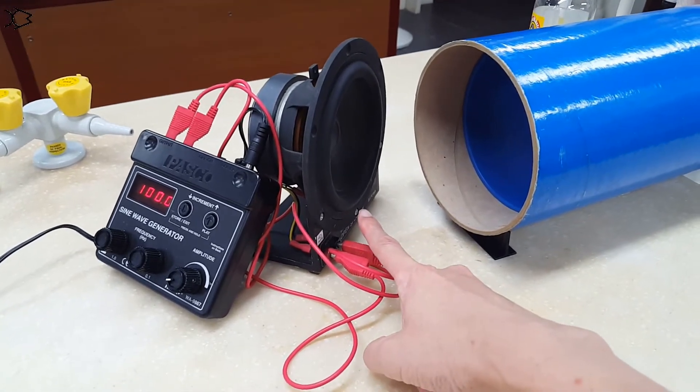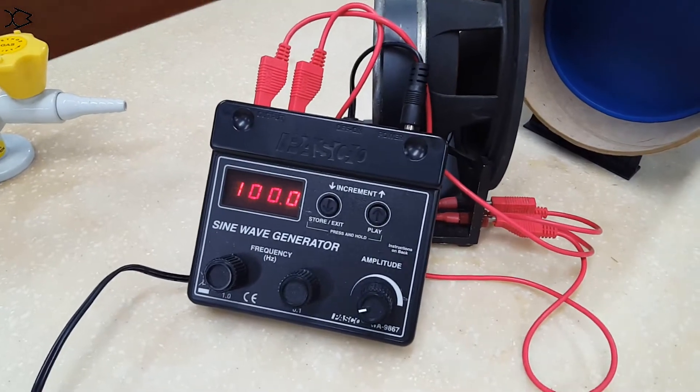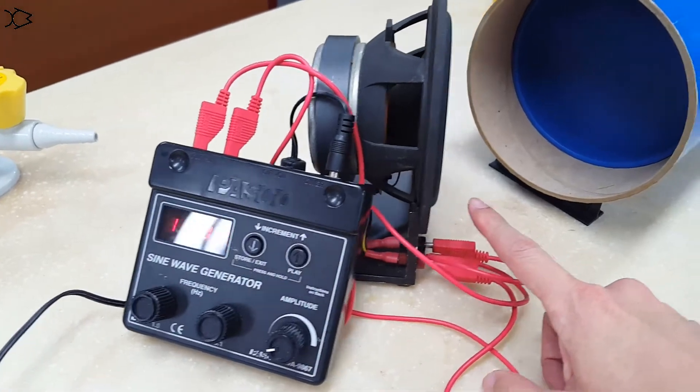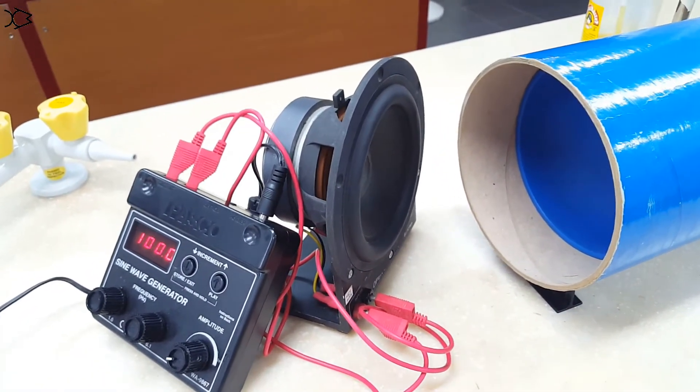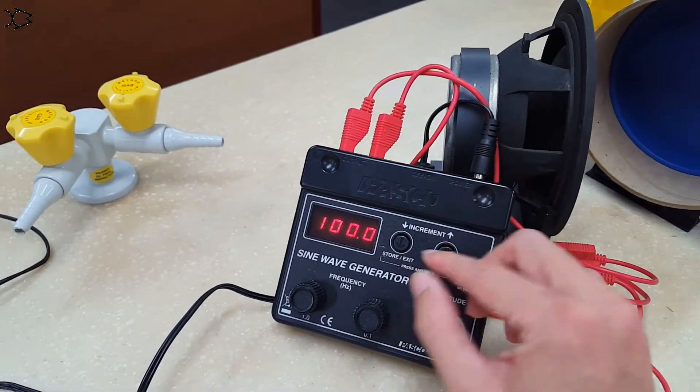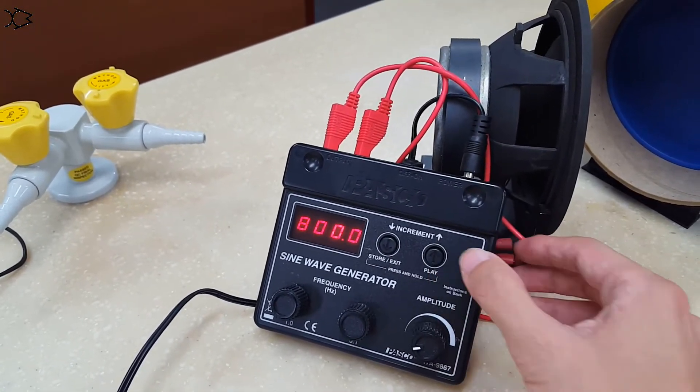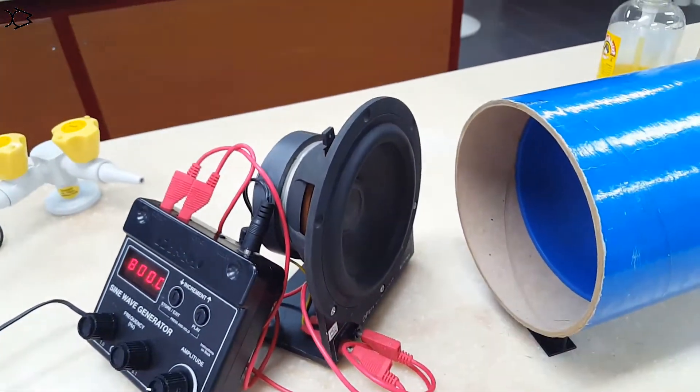We are going to position a speaker just outside the tube. This speaker is connected to a signal generator. So we can choose the frequency of the monotone that's being emitted by this speaker. Let me choose something like 800 Hz. So what you are hearing is the 800 Hz sound wave produced by the speaker.